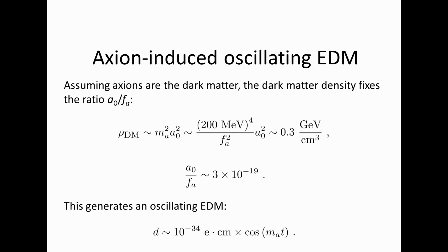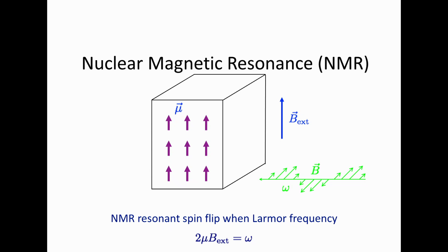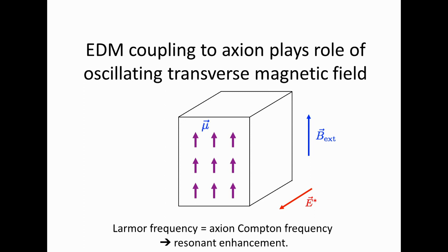Magnetometry is needed to detect such a small signal, and this resonant technique is a nice way to do this. We have NMR-based sensing: the axion plays the role of the oscillating transverse field through a coupling that looks like the EDM — the dipole moment dotted into the electric field. We choose a material with a strong real electric field, so there's an energy D·E, just as we have μ·B for magnetic dipoles. This transverse oscillation of the dipole moment excites a resonance condition when the axion Compton frequency matches the Larmor frequency.